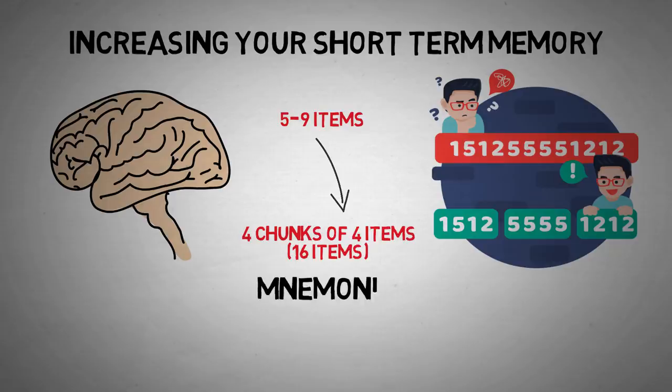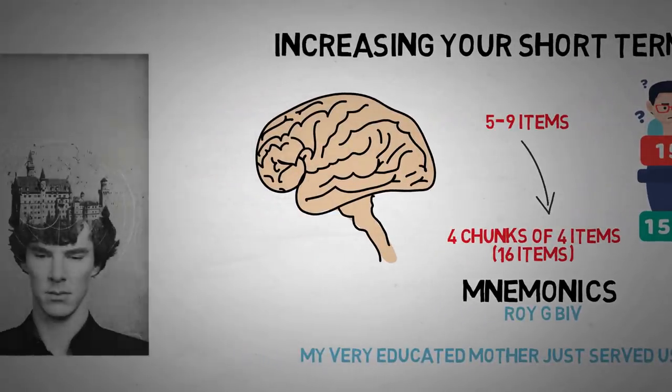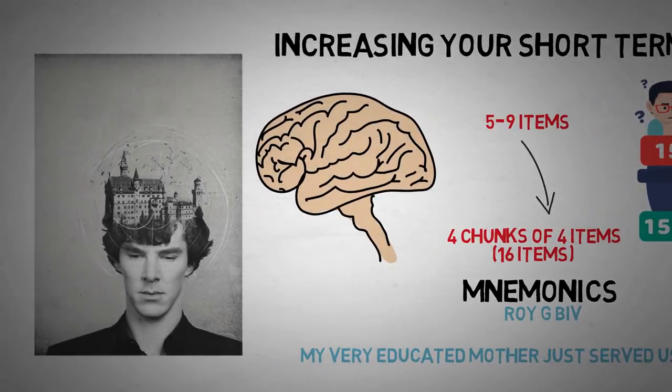Now, chunking can actually be used alongside other memory hacks to expand your ability to store more items in your short-term memory. In fact, the word mnemonic actually means memory device. And I have a whole article and a video on those, but here's a quick rundown. You can use an acronym like ROYGBIV to remember the colors of the rainbow. You could use an acrostic, like my very educated mother just served us nine pizzas, to help you remember the order of the planets from the sun. You could also use a mind palace, which is made famous from the Sherlock Holmes series. And there are a few other mnemonics, but you'll just have to watch that other video.